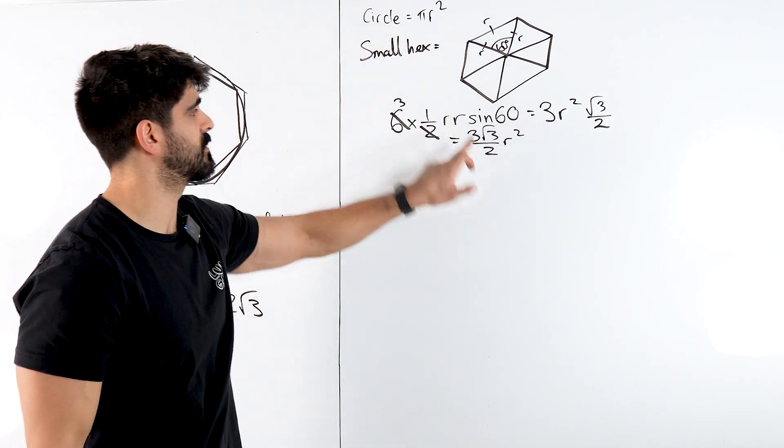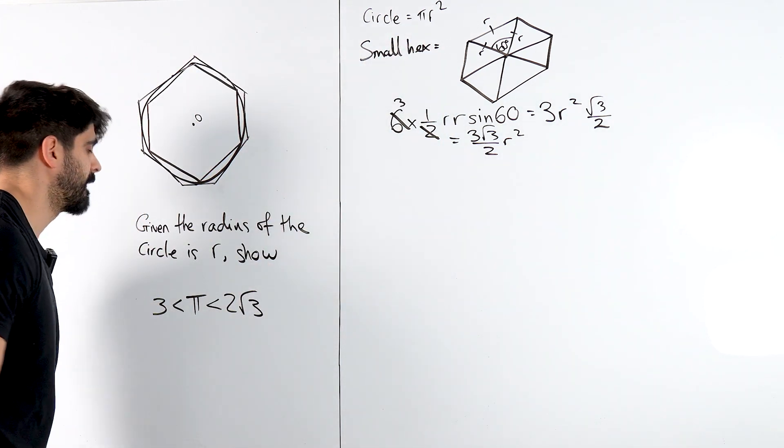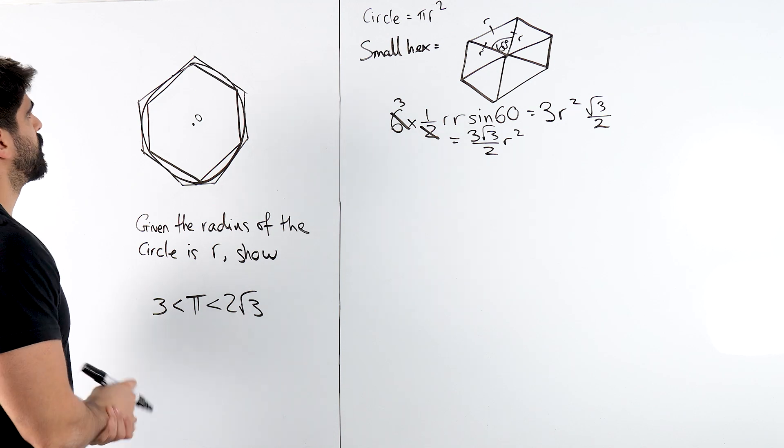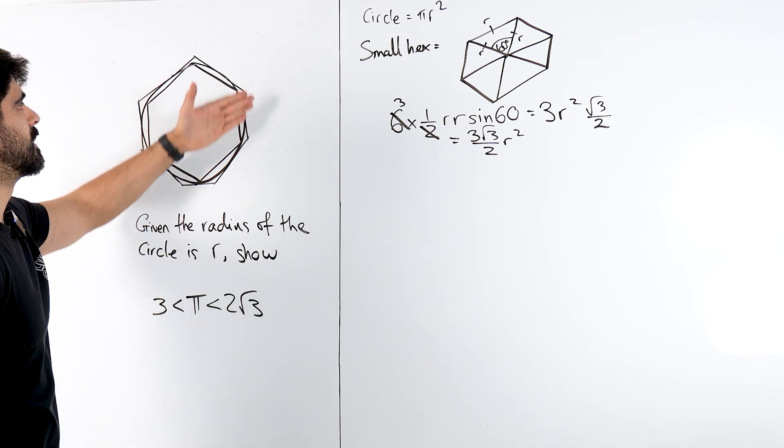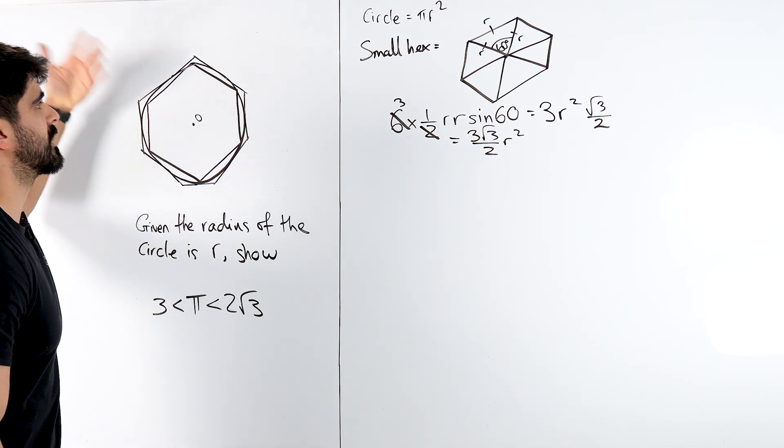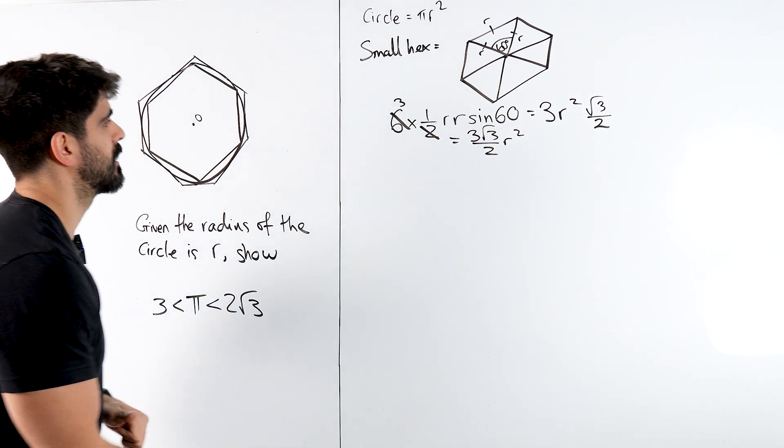So my small hexagon is 3 root 3 over 2 r squared. So we're saying this has to be bigger than this. And then we need to look at the bigger hexagon.